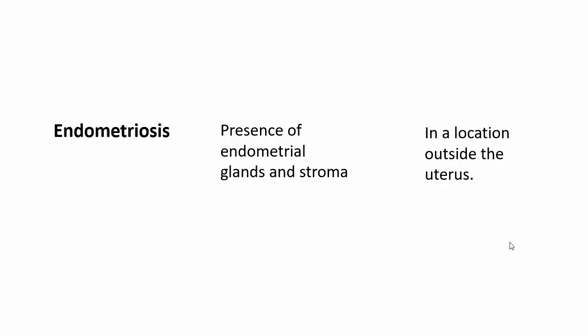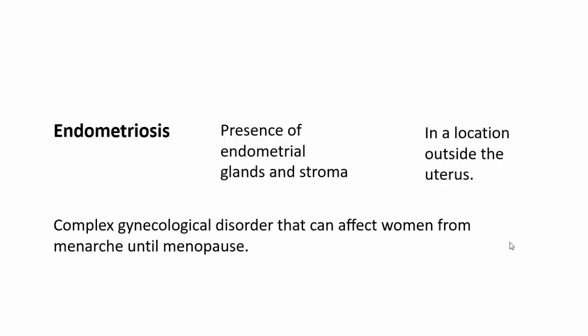Now what is endometriosis? Endometriosis is defined as the presence of endometrial glands and stroma in a location outside the uterus. That is very important because presence of endometrial glands and stroma within the uterus — within the myometrium — is called adenomyosis, whereas the presence in a location outside the uterus is known as endometriosis.